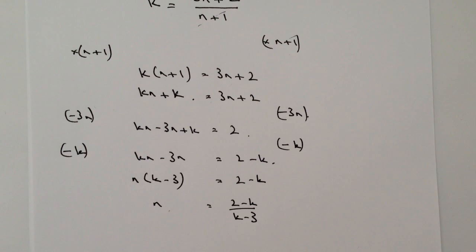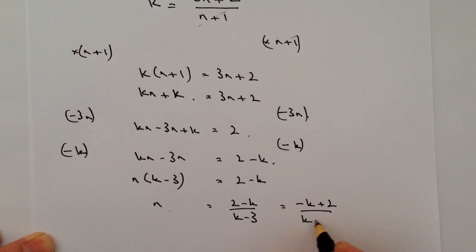However, you could write this in slightly different ways if you wanted to, just to make it a little bit tidier. It's a bit untidy as it is at the moment. So I would probably write that as either something like minus k plus 2, remember this is a positive value of 2, divided by k minus 3.